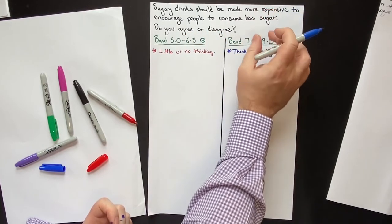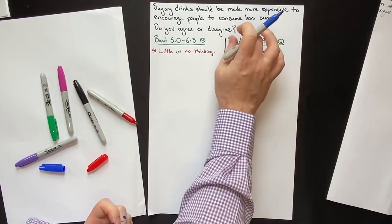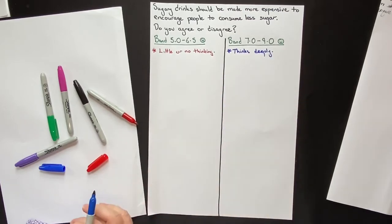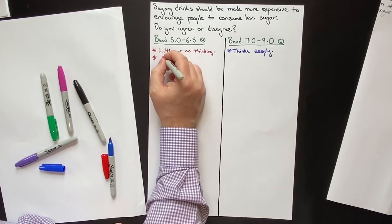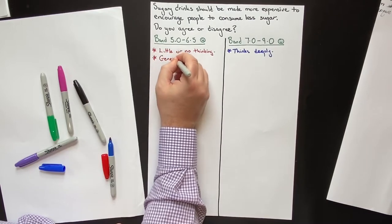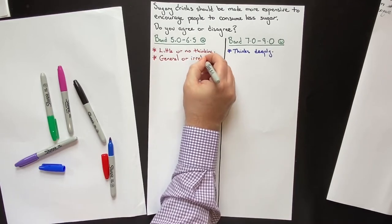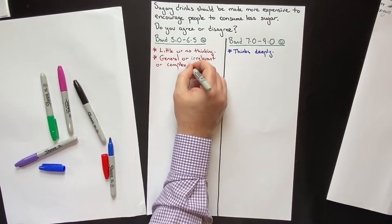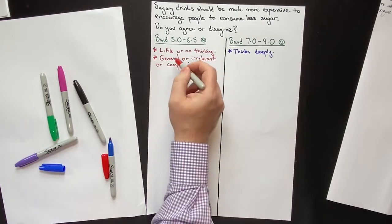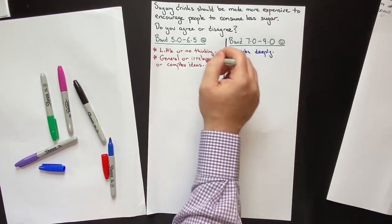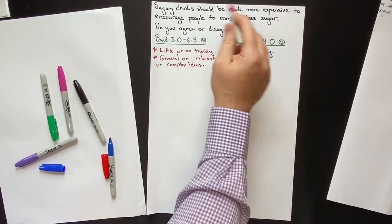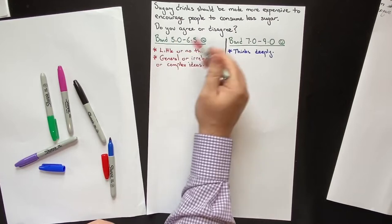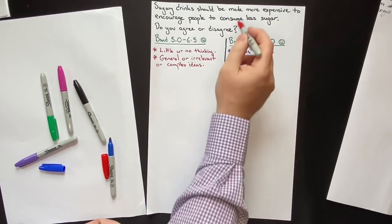The low-scoring student starts off very confused, so their seed is going to produce a confused essay. The high-scoring student starts off with a very simple, clear idea in their mind as to what the examiner is looking for — therefore their essay is simple, clear, and easy to understand. The low-scoring student then generates general, irrelevant, or complex ideas, just writing randomly about the topic without really focusing on the specific thing asked.